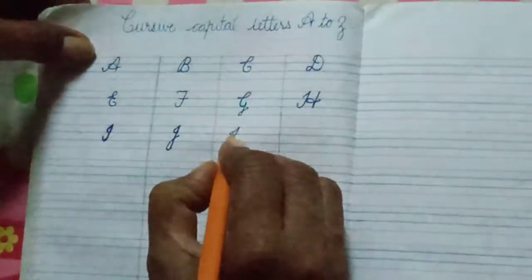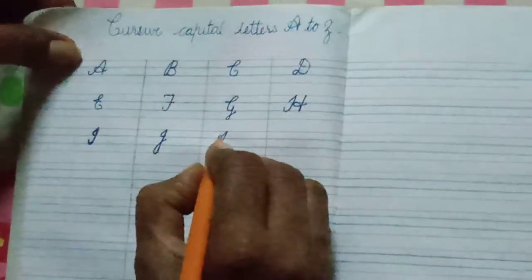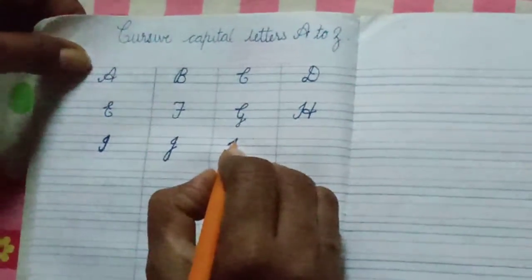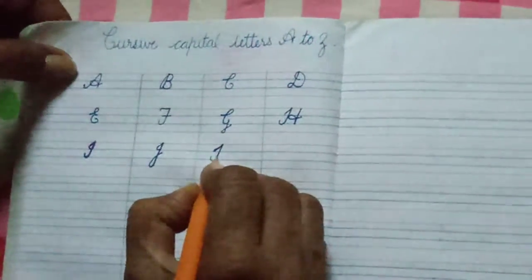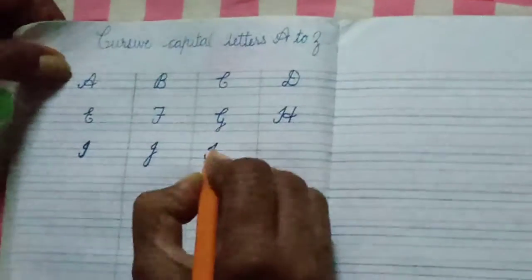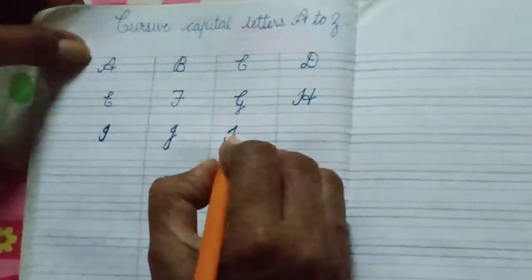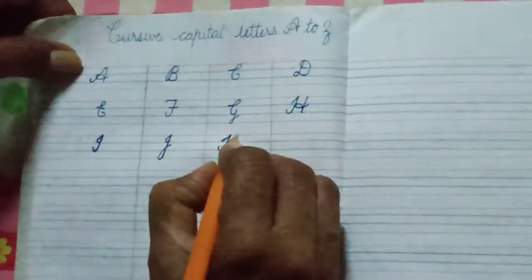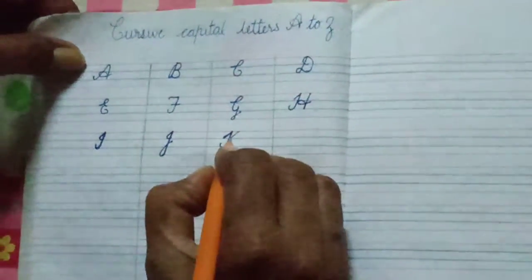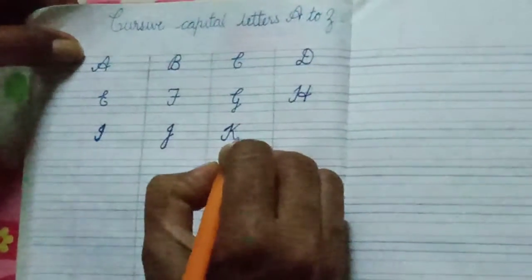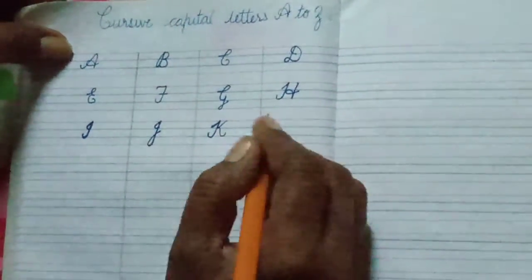Then K. From the second line, touch the first line, come slanting down, turn. From the middle line, you have to touch up, then come down and turn like this. K.